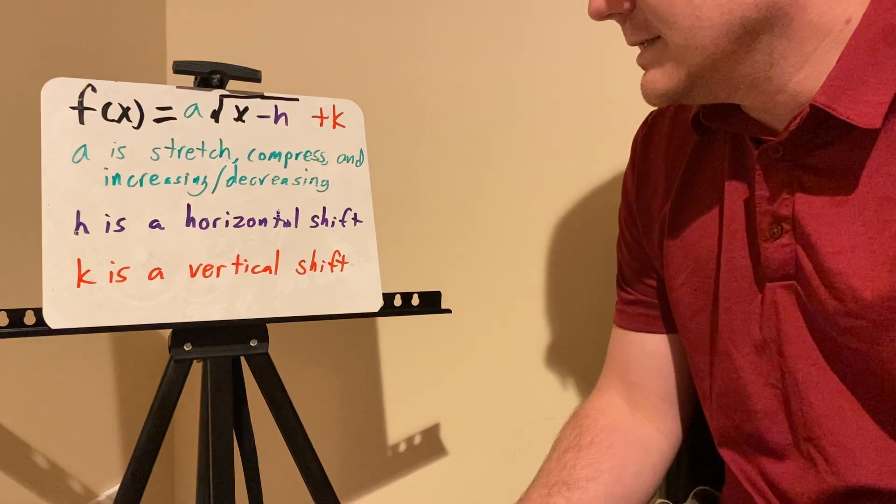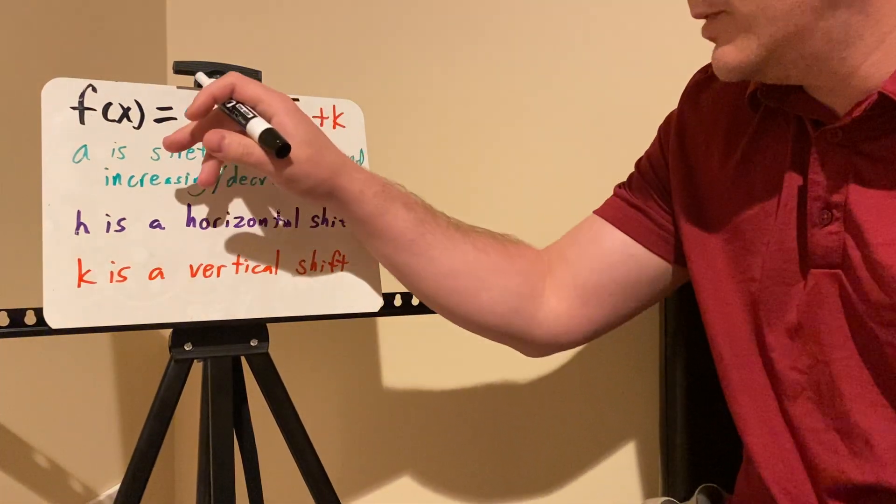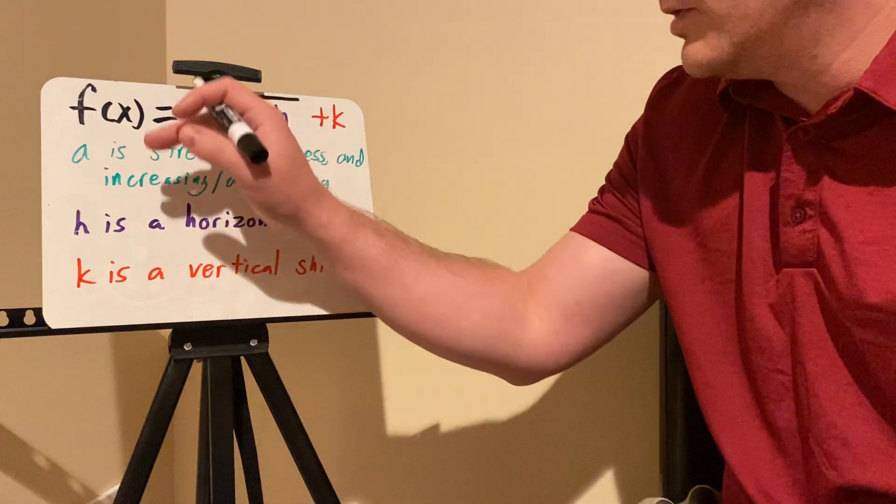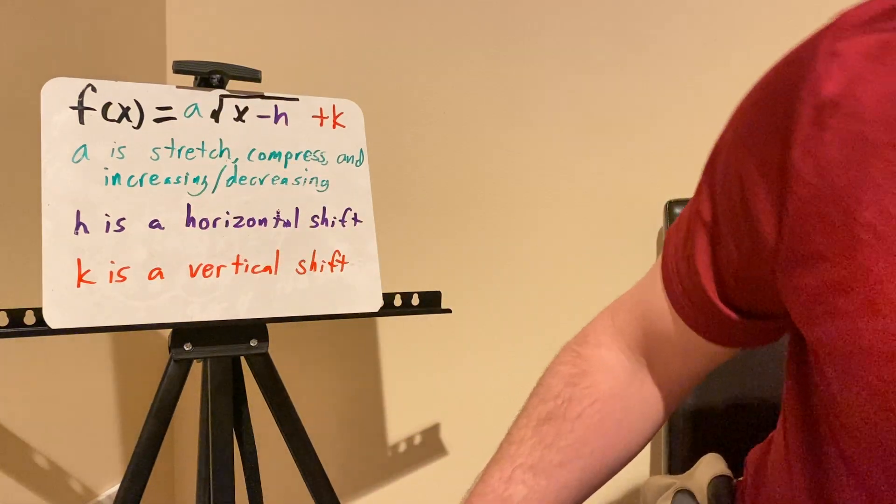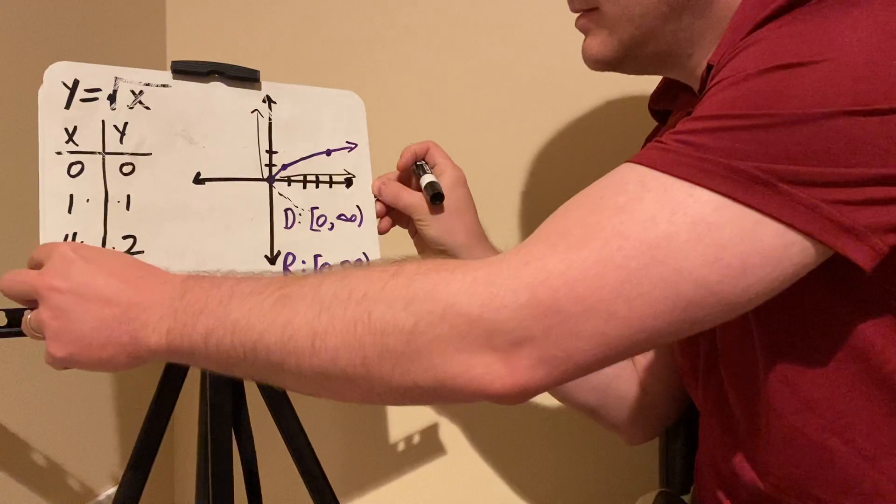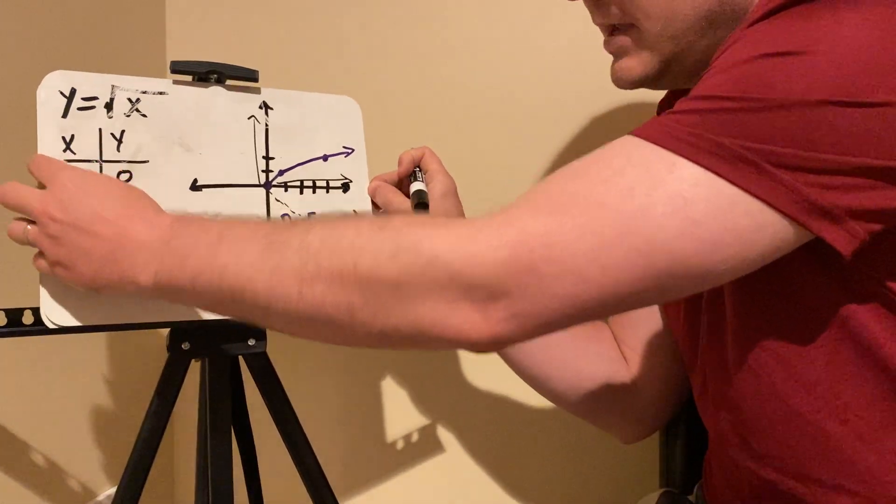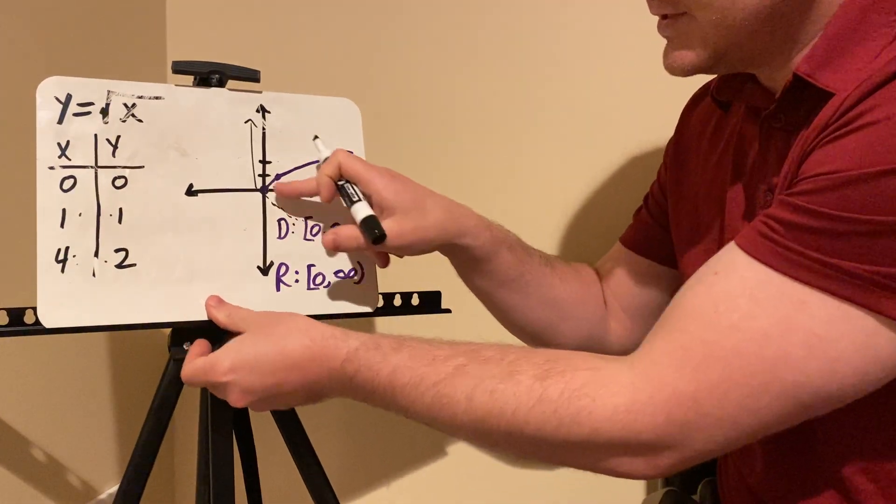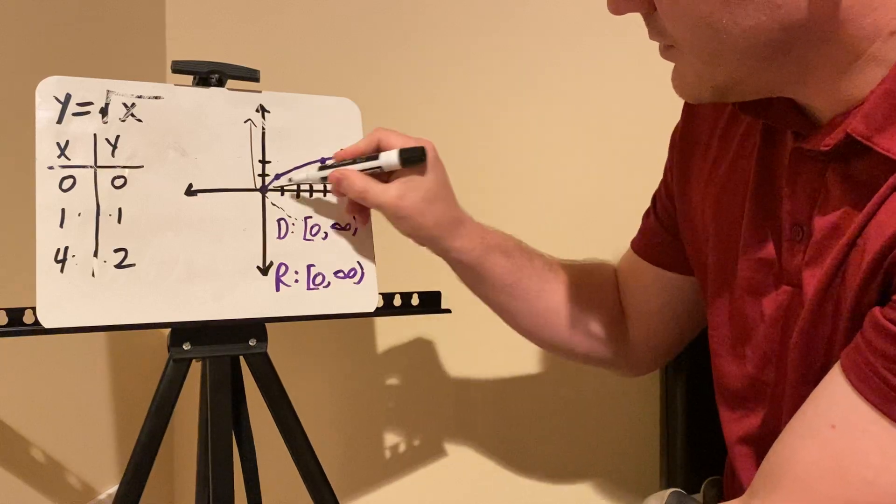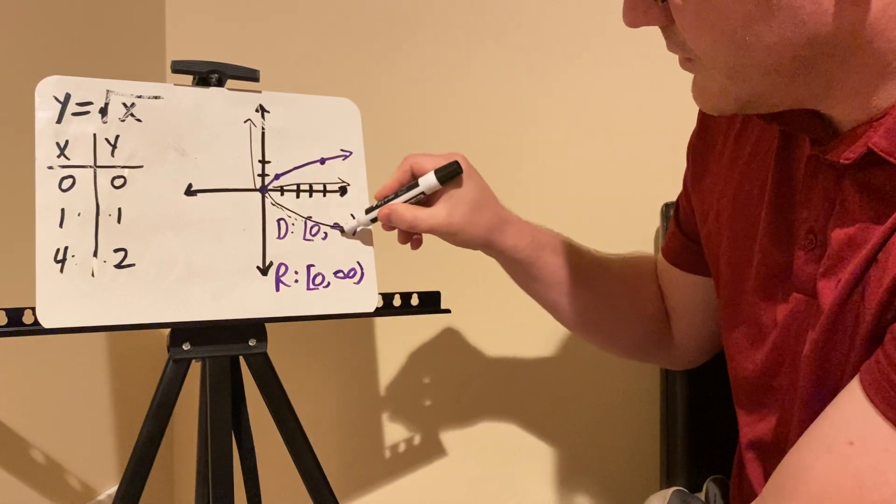Now, you can translate this in the same way. You can stretch and compress it with an A value. Also, the A value would kind of indicate the increasing or decreasing. What do I mean by that? Basically, if you take the A and you make it negative, it just kind of flips this over. So instead of it being increasing, it kind of looks like a decreasing value there.